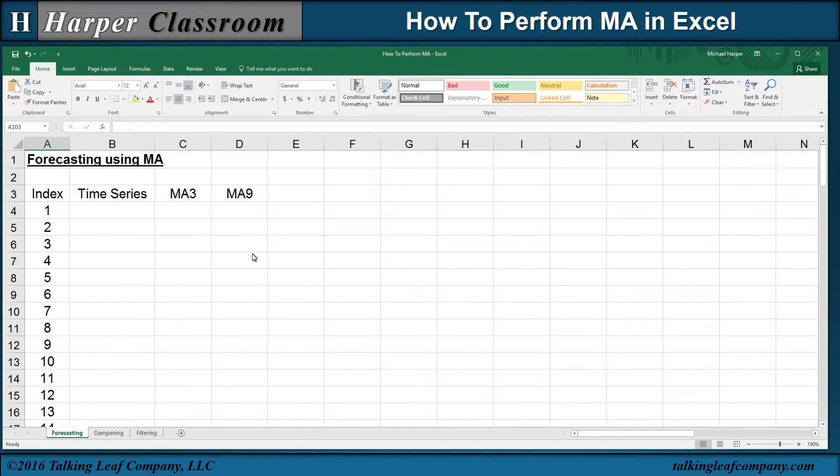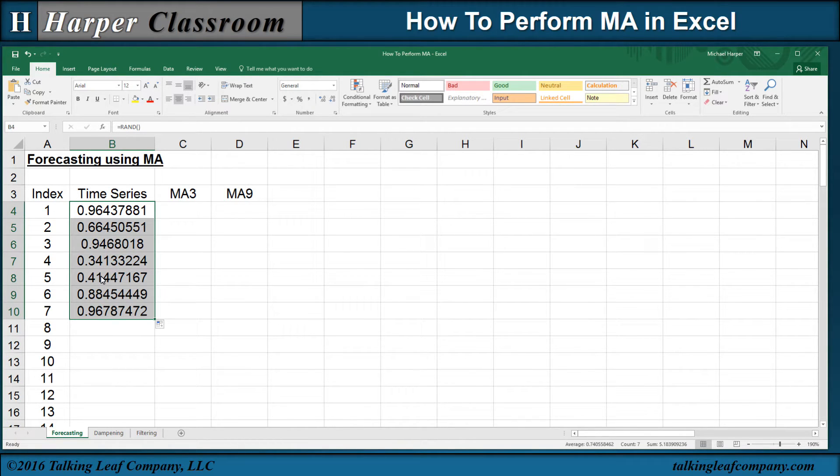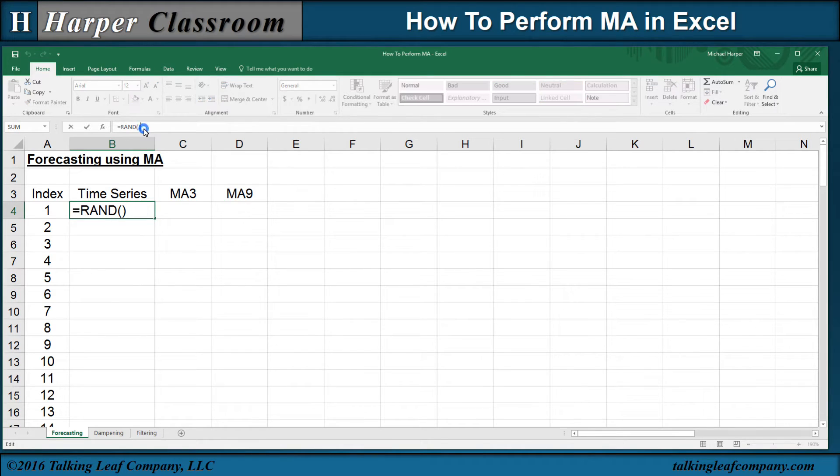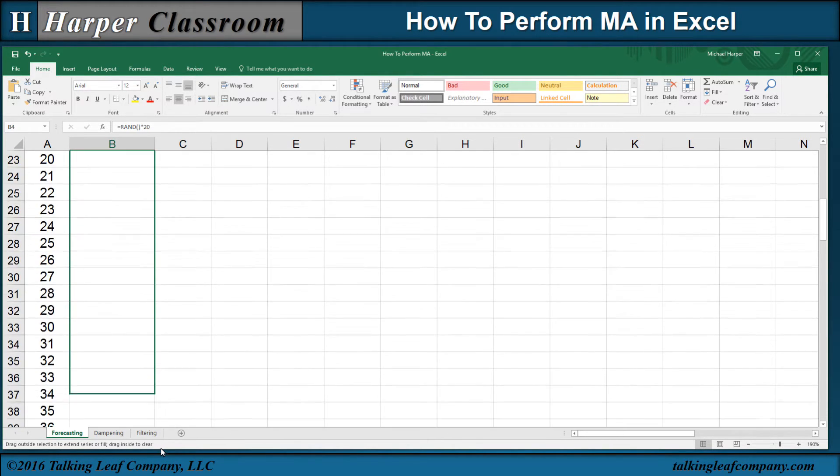So now the time series. Let's start with a random number generator. We copy this down and we see that this random number generator will generate random numbers between 0 and 1. Let's multiply this by 20. So now our time series will range between 0 and 20 with a mean somewhere around 10.